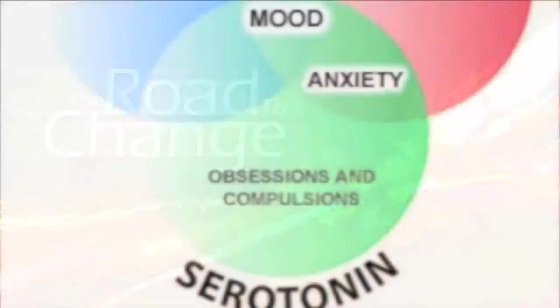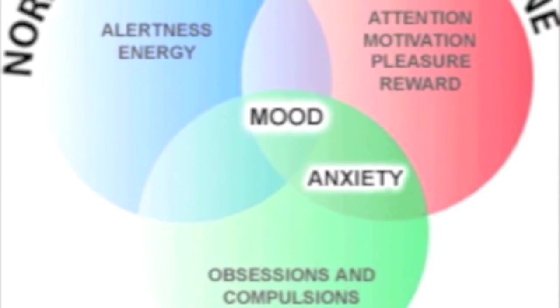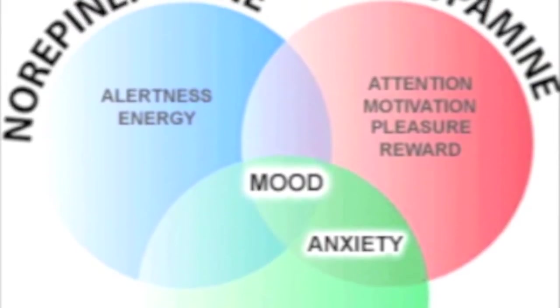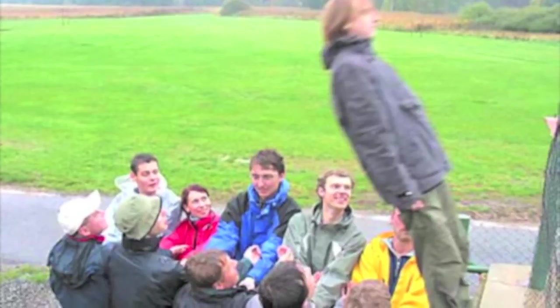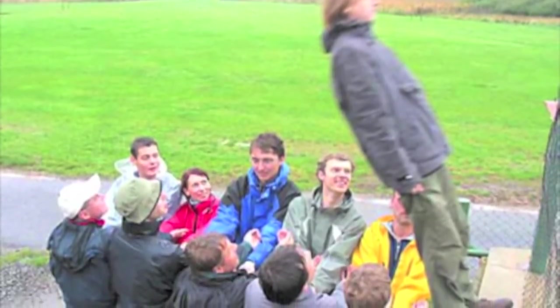The brain will reward itself for adaptive behaviour by releasing several different neurotransmitters. These neurotransmitters give us our sense of well-being, or trust, or love, dependent on the situation and the stimulus.